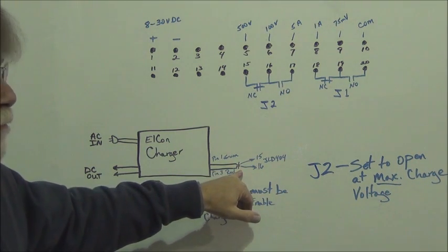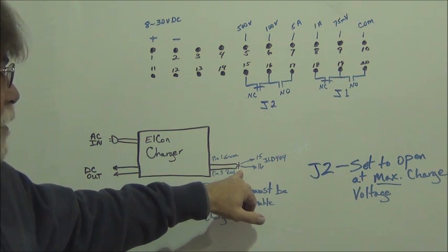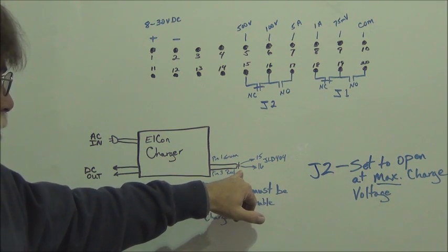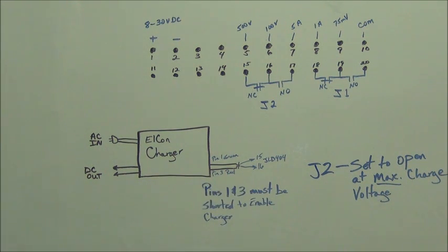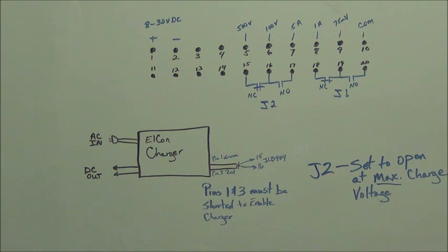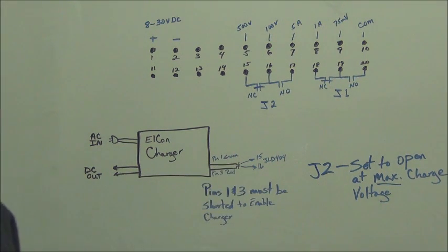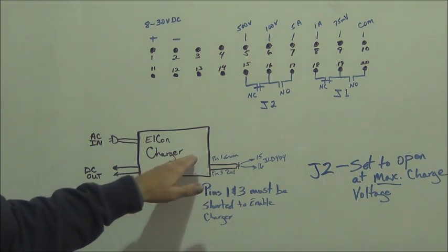Now, there's a little pigtail that is on the Elcon charger. There's a green wire and a red wire. There are pins one and three. Pin one is green, pin three is red. And those have to be shorted in order to enable the charger to charge.